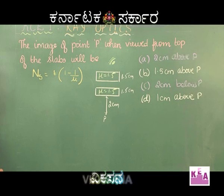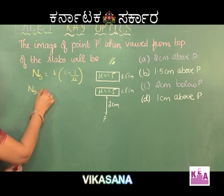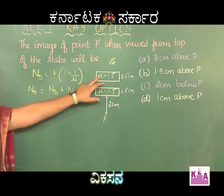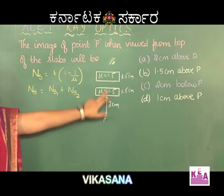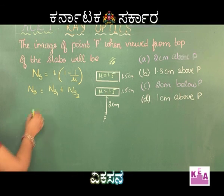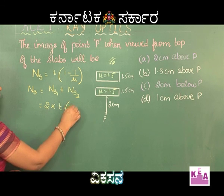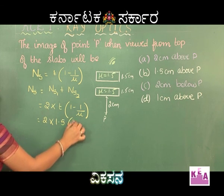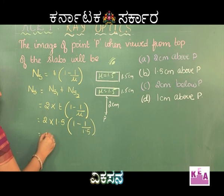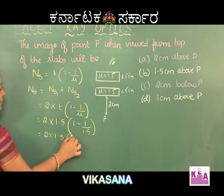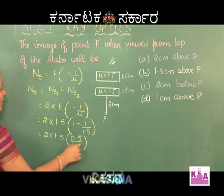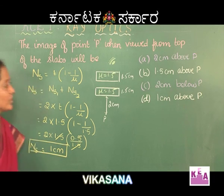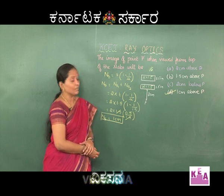The effective normal shift is NS = NS1 + NS2, the combined effect of the two glass slabs. Since the thickness and refractive index are the same for both slabs, we can write it as 2 × T × (1 − 1/μ). Thickness is given as 1.5 and the refractive index is also 1.5, so this equals 2 × 1.5 × (0.5/1.5), which is 1 centimeter. Therefore the correct answer is option D: 1 centimeter above P.